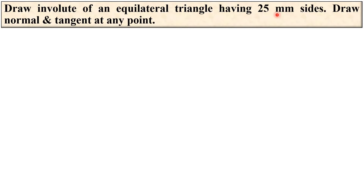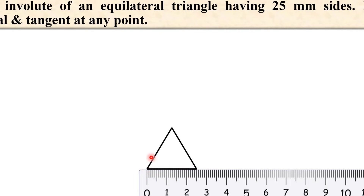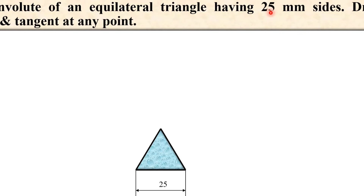Let us see the description: Draw the involute of an equilateral triangle having 25 mm sides. Draw the normal and tangent at any point. First, draw the equilateral triangle having a 25 mm side. Take 25 mm side to generate the equilateral triangle. Keep in mind that equilateral means all sides are equal, and the total angle sum of the triangle is 180 degrees, so each angle must be 60 degrees. Mention the side of this triangle as 25 mm as given in the description.